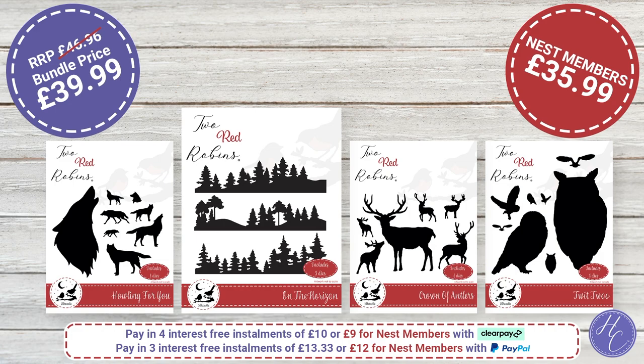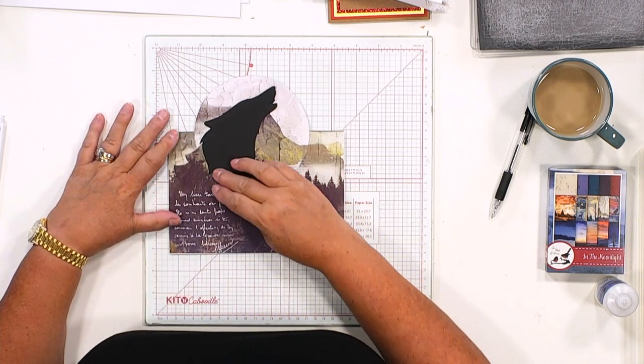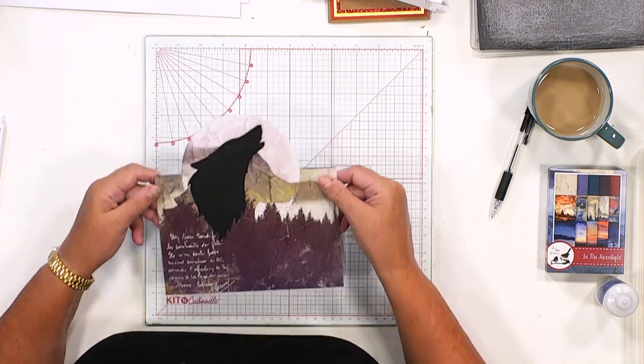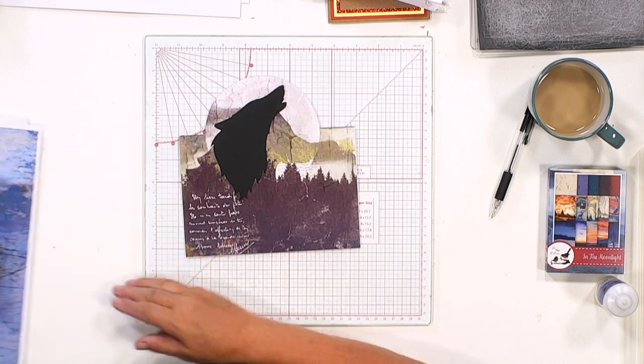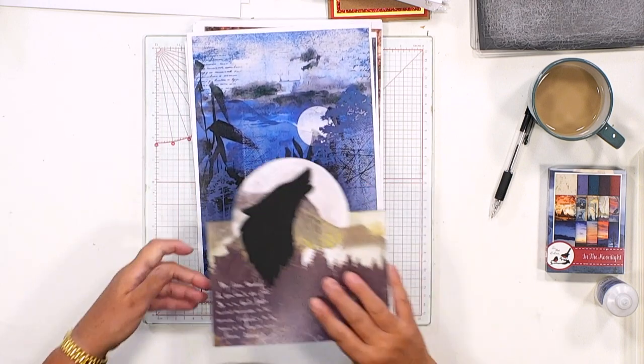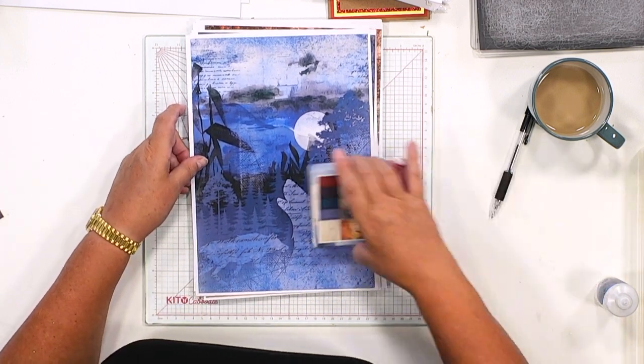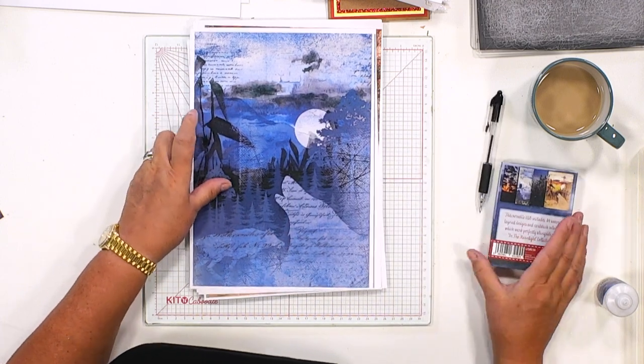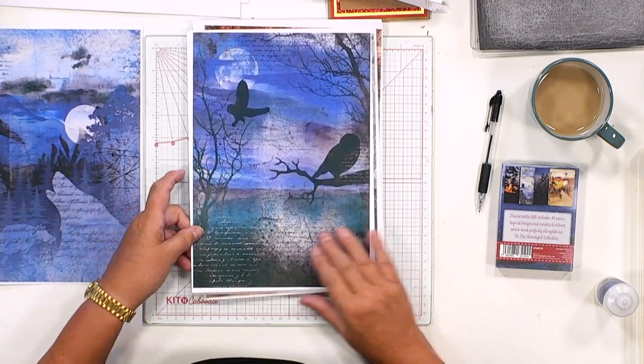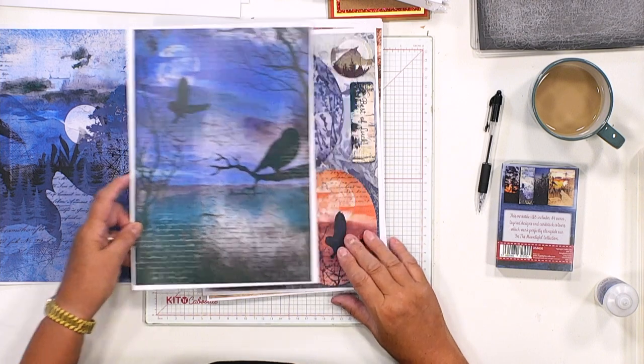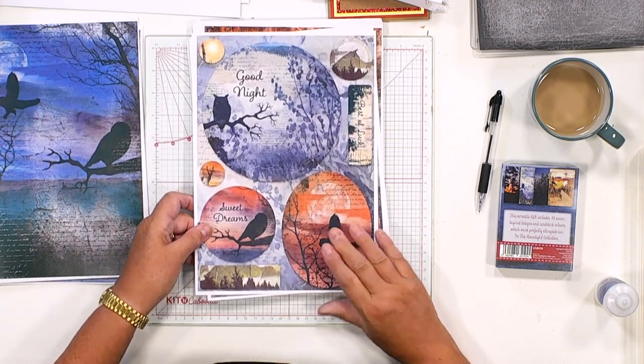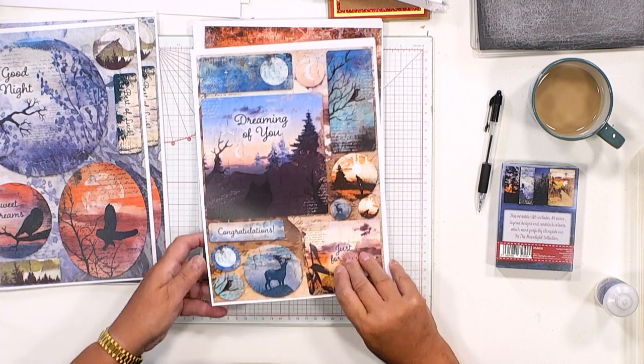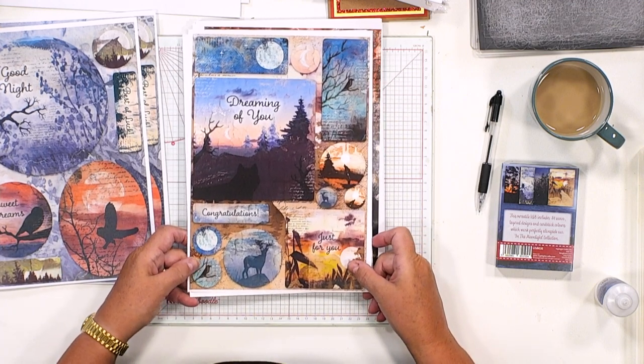I've got another design I want to show you. This one utilizes the die but we've got all of the details. There's the greeting card, it's a tenfold with that lovely sentiment. I'm going to share some of these with you. This is from In the Moonlight from the USB collection and you've got layered designs, words, stories. These are just clever projects. You've got a selection of different toppers in here that you can add more detail to. I've got Dreaming of You, congratulations just for you.